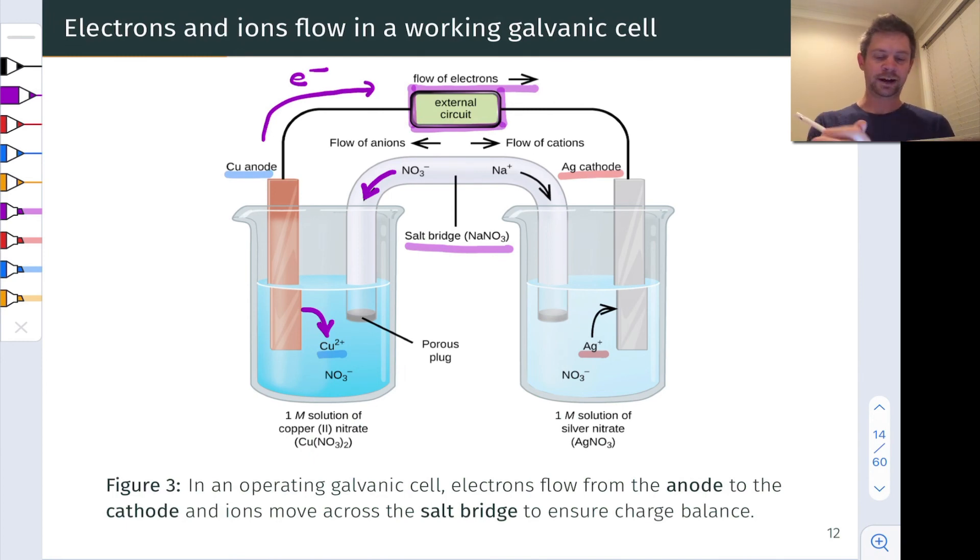On the cathode side, we're going to have silver plus reduced to silver metal by the electrons coming in from the external circuit. At the same time, sodium plus cations are going to flow in to counterbalance the developing negative charge of the nitrate anions as the silver plus leaves solution. The salt bridge here is a critical ingredient, but the overall idea, the big picture of a galvanic cell, is that we're separating the two half reactions in space.